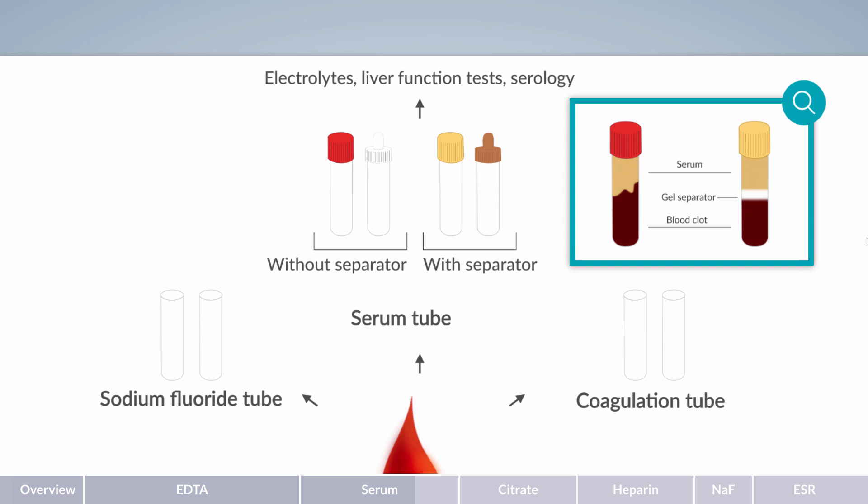The separation gel acts as a diffusion barrier because it has a specific density between that of serum and coagulated blood. During centrifugation, the gel forms a stable barrier between these two layers. This barrier significantly reduces serum contamination by cell components and increases serum yield. However, if a variety of laboratory parameters are to be measured, several tubes should be collected. One advantage of serum samples is that they can be frozen and stored for future use.